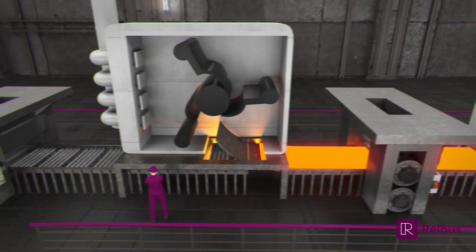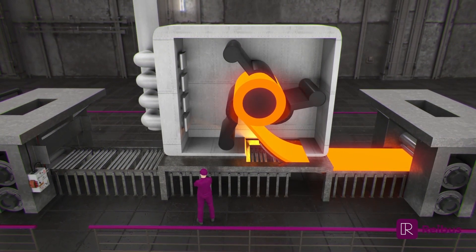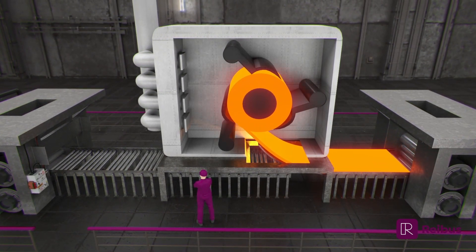A steckel mill maintains the material's temperature by installing heated coil boxes on either side of the rolling mill stand.